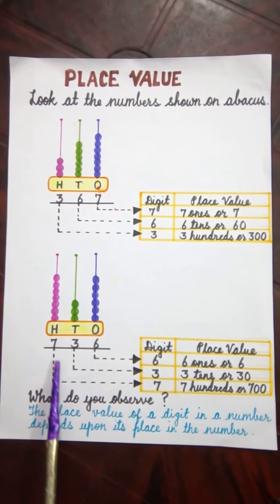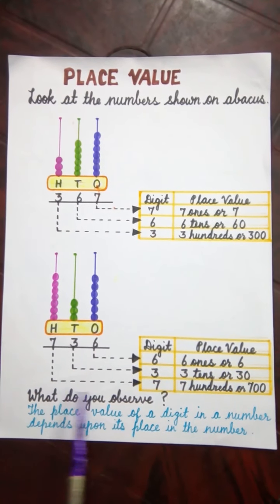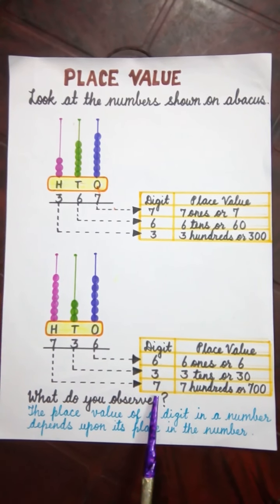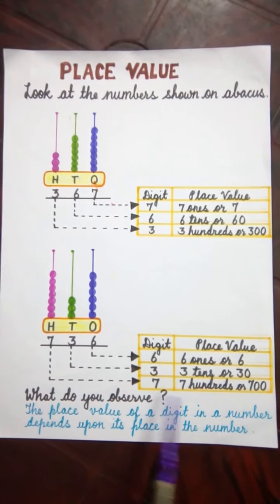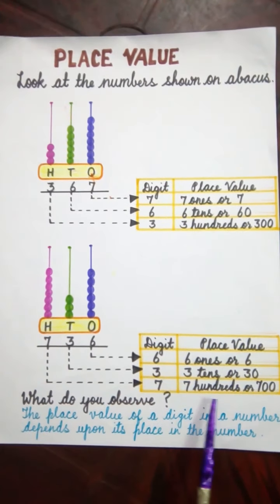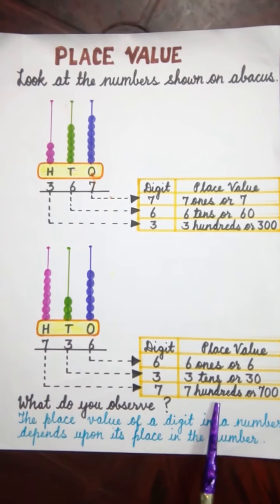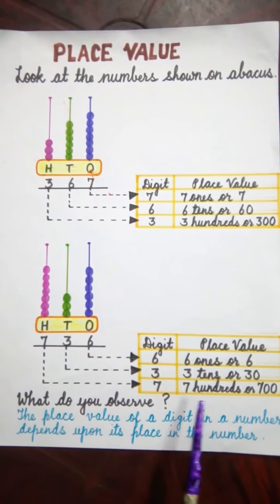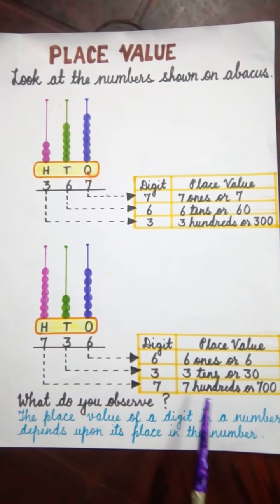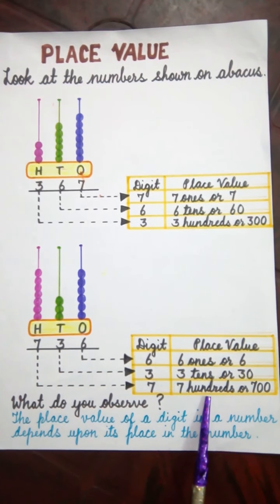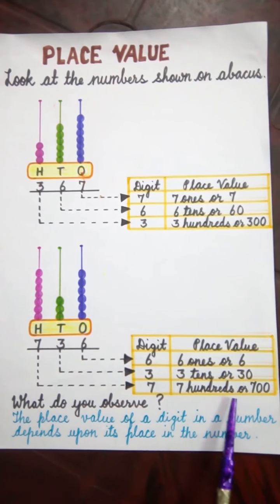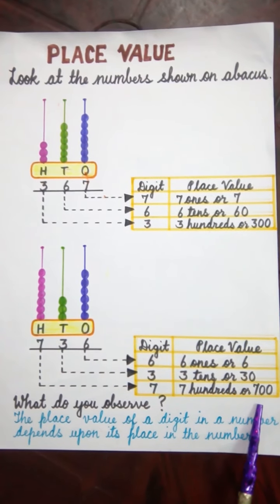Now what is the place value of 7? As 7 is in the 100's place, so the place value of 7 is 7 hundreds. Or we can say 7 multiplied by 100 is equal to 700.